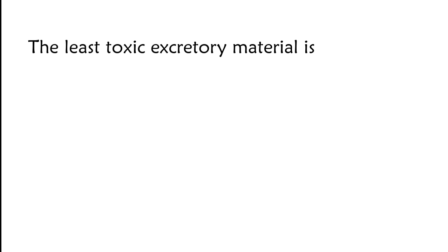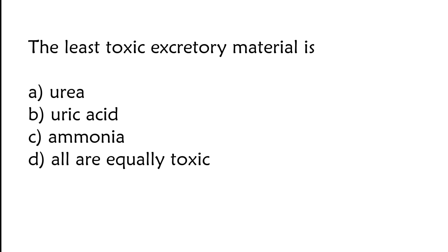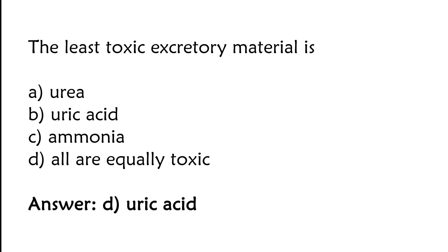The least toxic excretory material is: urea, uric acid, ammonia, or all are equally toxic. The correct answer is option D — uric acid is the least toxic excretory material.